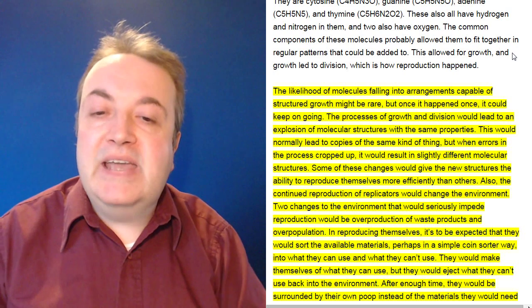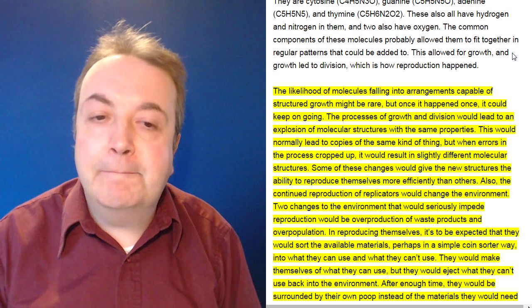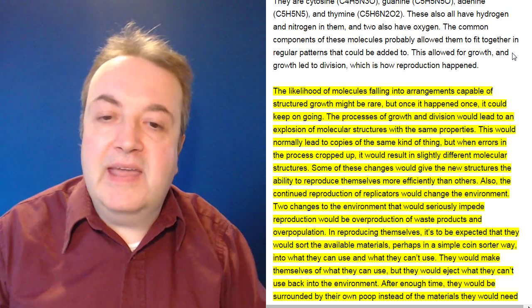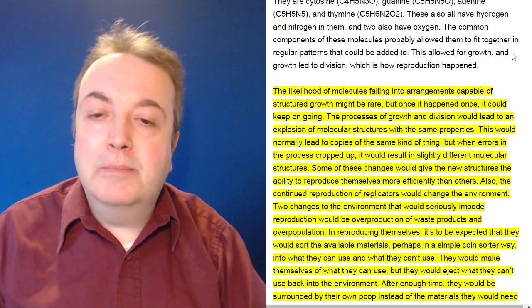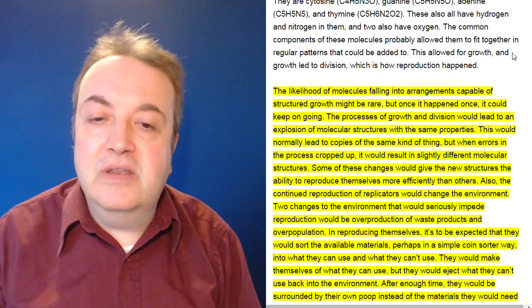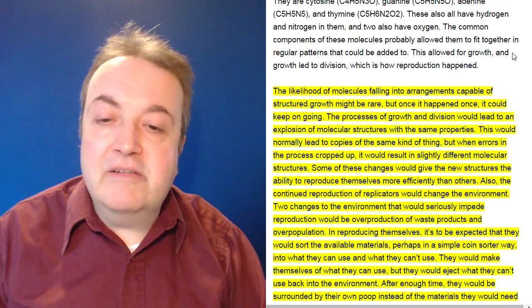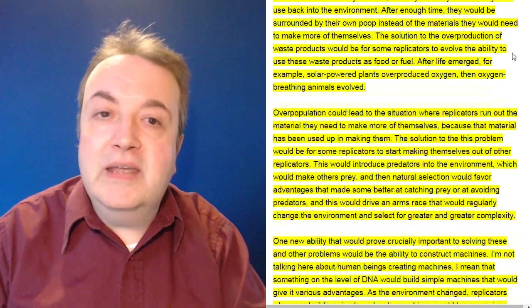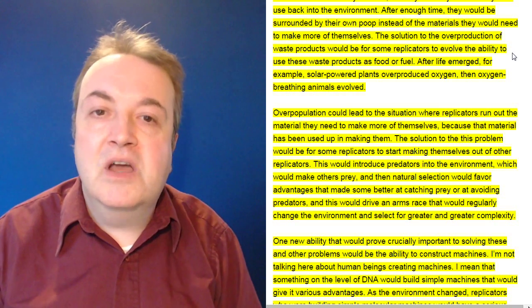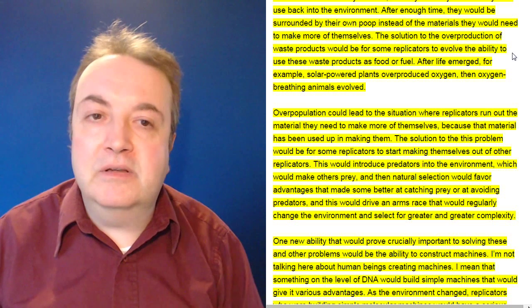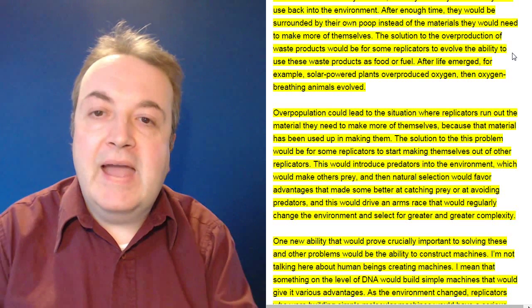Two changes to the environment that would seriously impede reproduction would be overproduction of waste products and overpopulation. In reproducing themselves, it's to be expected that they would sort the available materials, perhaps in a simple coin sorter way, into what they can use and what they can't use. They would make themselves out of what they can use, but they would eject what they cannot use back into the environment. After enough time, they would be surrounded by their own poop instead of the materials they would need to make more of themselves. The solution to the overproduction of waste products would be for some replicators to evolve the ability to use these waste products as food or fuel.